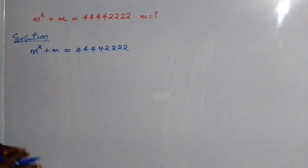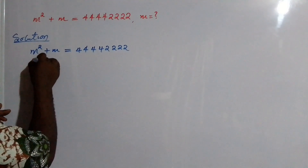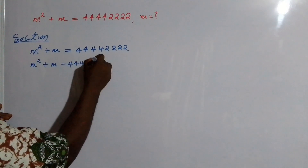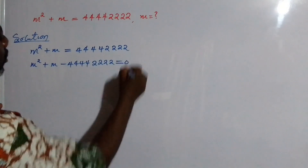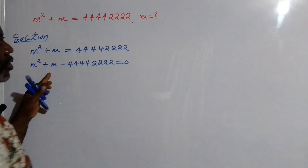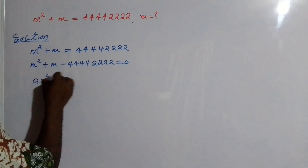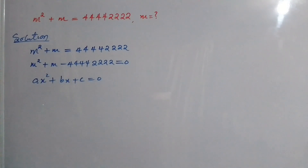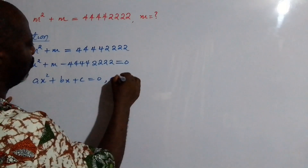The first thing is to write this in standard quadratic form, so we have m squared plus m minus 44,444,222 equal to zero. This equation is comparable to ax squared plus bx plus c equal to zero. Making the comparison, we find that a equals one.